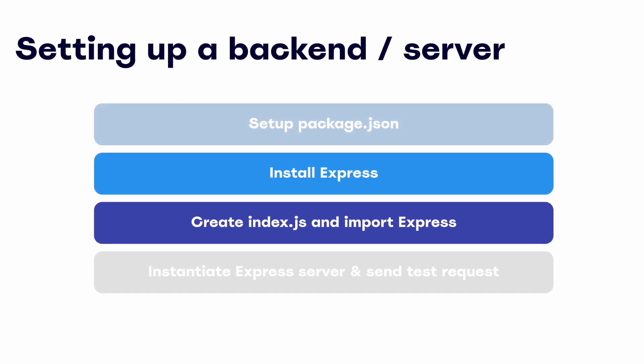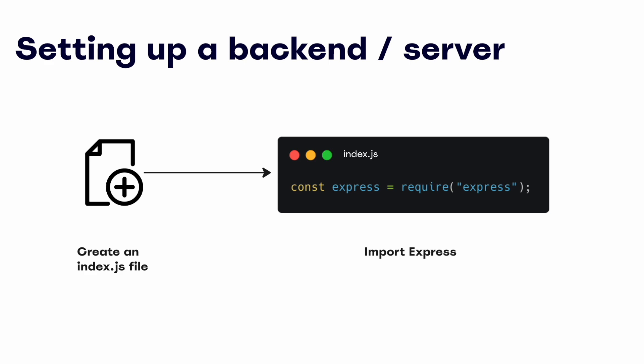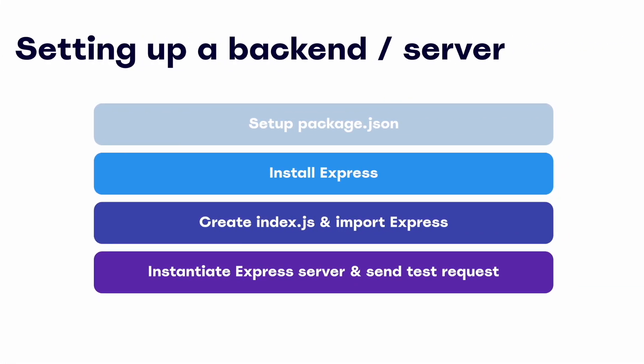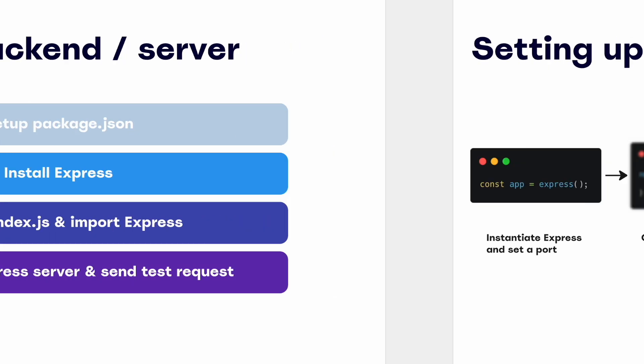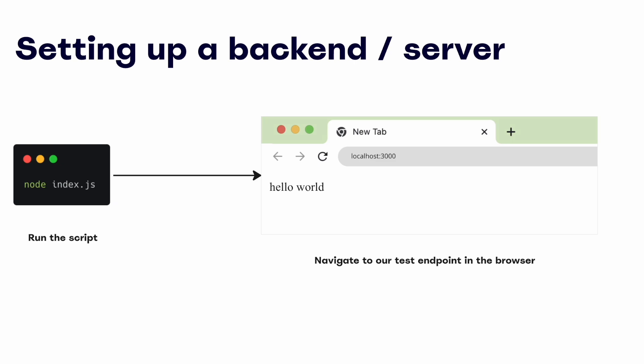Now we can create our main script, index.js, and import our Express server. Within the same directory, we'll create an index.js file — remember this was referenced in our package.json. At the top of this file, we'll import Express using the require statement shown here. Lastly, we need to instantiate our Express server and send a quick request. We'll start with the instantiation statement in our script, then set up a simple get request, and send a response such as hello world to this endpoint. We also need to specify a port for our server to listen on — we're using 3000 here. Now we can run our script and navigate to localhost 3000. On success, our terminal should reflect that our app is listening, and if we go to our browser at localhost 3000, we should see the hello world text that we included in our endpoint.